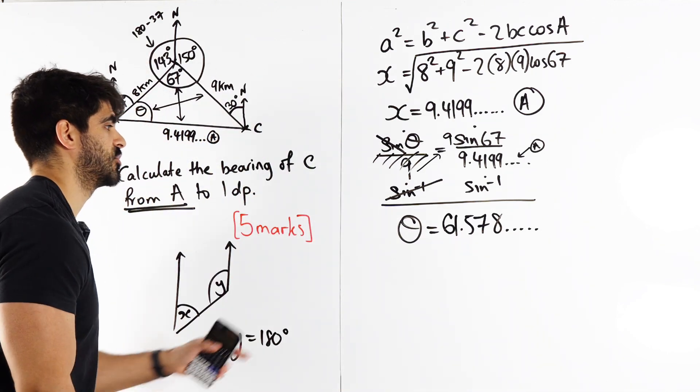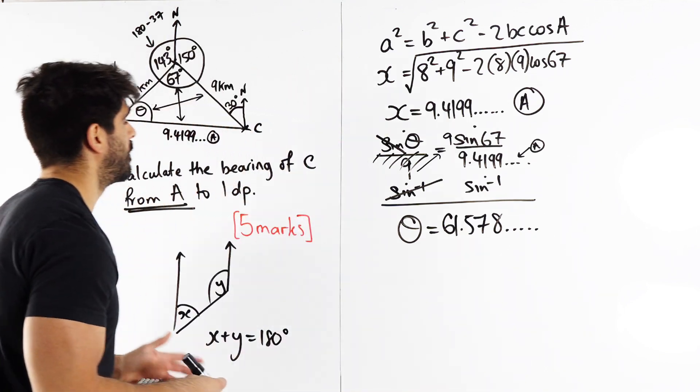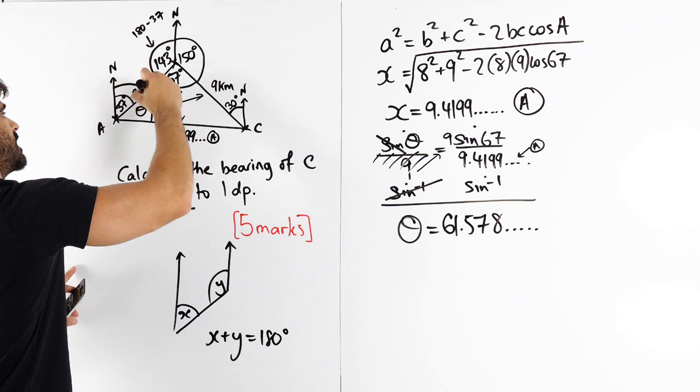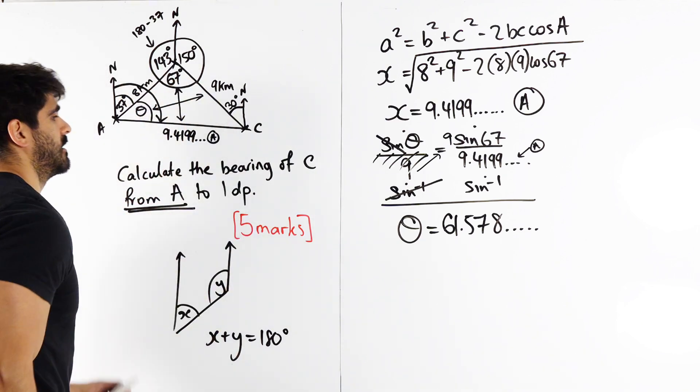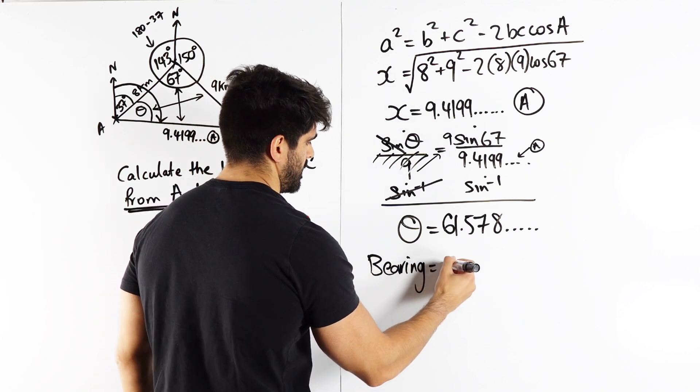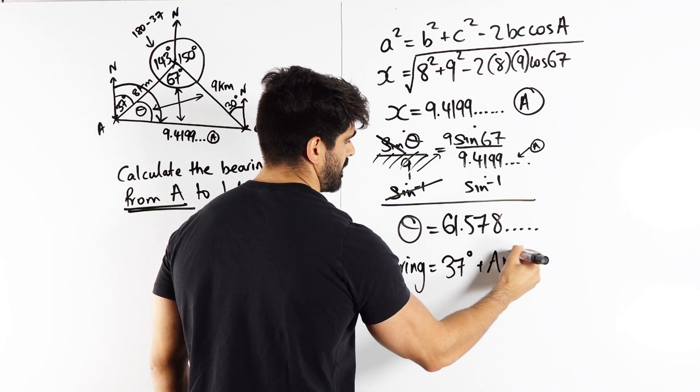But are we done yet? No. Yeah, so assumptions might end here. I mean, if you got this far, that's very good. But remember, we wanted the bearing. I need to add 37 because I need that full rotation. Okay? So, my bearing is 37 degrees plus the answer button.